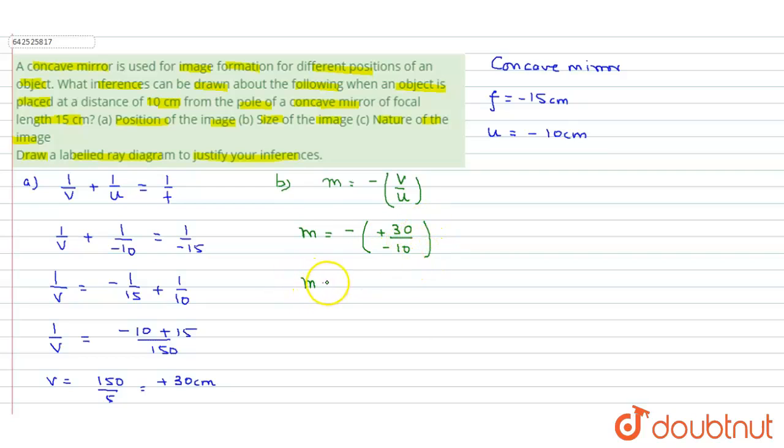The value of m comes out to be plus 3. Now, since the value of m is more than 1, the image formed is magnified.